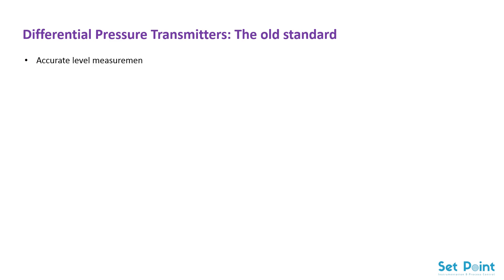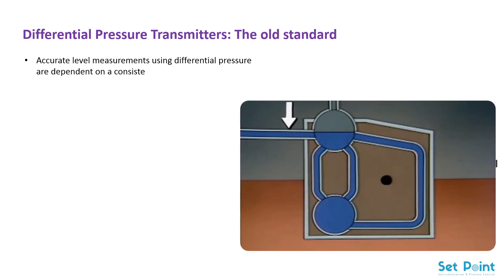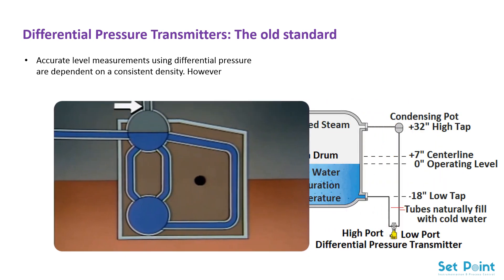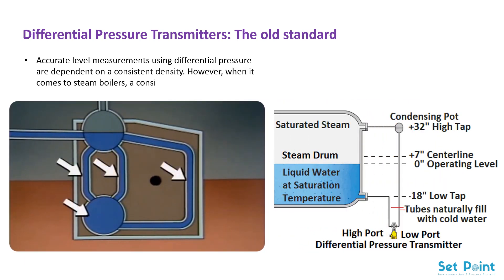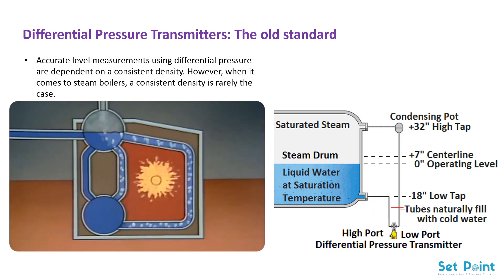Accurate level measurements using differential pressure are dependent on a consistent density. However, when it comes to steam boilers, a consistent density is rarely the case. During startup and shutdown, the air space in the vessel undergoes a significant density change as temperatures rise to upwards of 600 degrees Fahrenheit, pressures reach 1500 PSI, and steam becomes saturated steam.